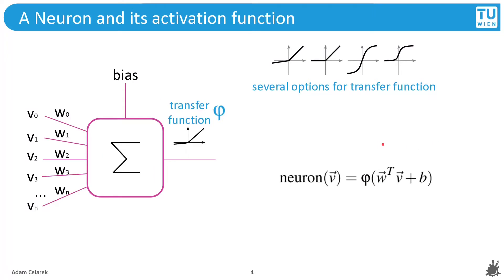Here you can see a neuron. A neuron consists of some weights which are multiplied by the input and then summed up. Then you add a bias and you apply the transfer function. This part you can write as a dot product of the weight vector times the input vector plus the bias and the transfer function. There are several options for the transfer function, but we will not go into the details.